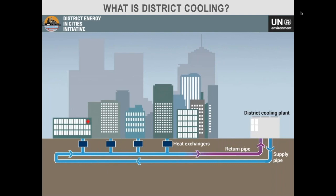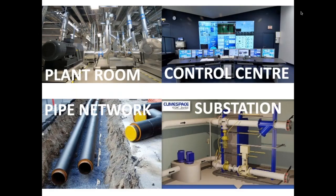One technology we're promoting is district cooling. For anyone who doesn't know what district cooling is, it essentially centralizes cooling within a neighborhood: rather than each building having its own ACs or chillers, we centralize that into one plant and provide chilled water through underground pipes to each building, where heat exchangers extract the chilled water. This includes a plant room with chillers in the central plant, a control center to optimize the network, a highly insulated underground pipe network to prevent losses, and a substation — which you might find underneath or next to a building — that links the district cooling supply pipe with the building's internal cooling system.